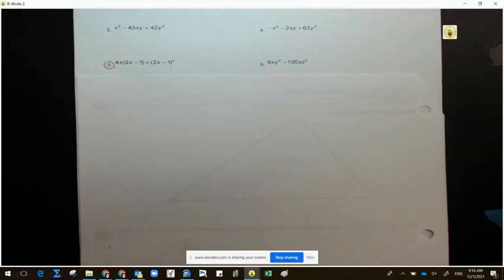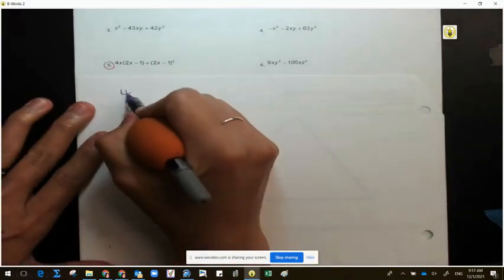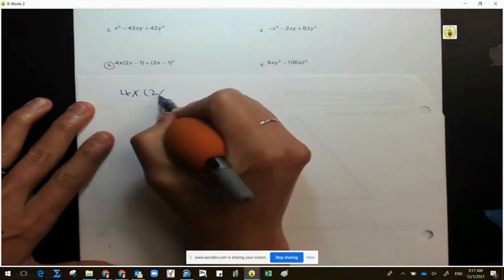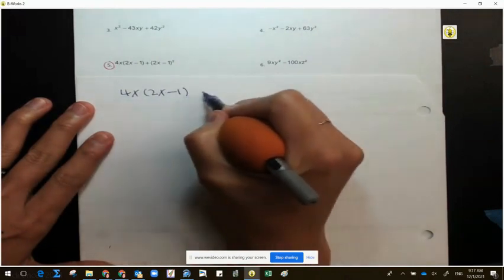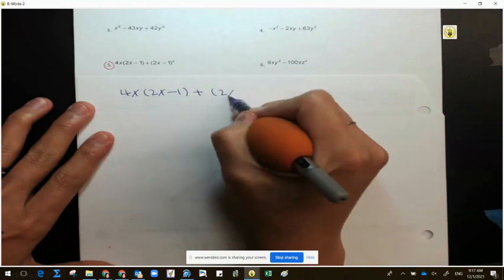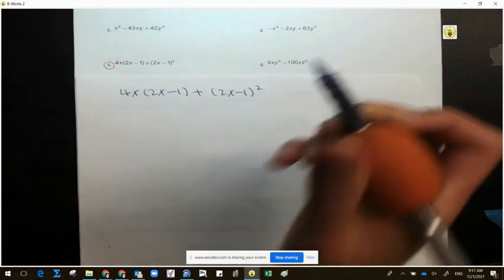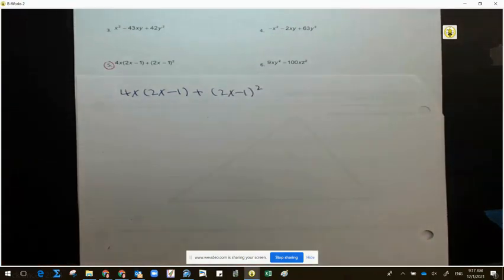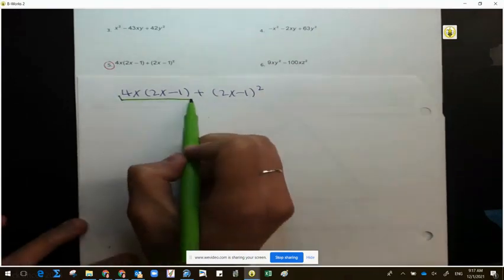I think I'm going to rewrite this. So we have 4x times 2x minus 1 plus 2x minus 1 all squared. And I want you to look at this as a set into two different components.